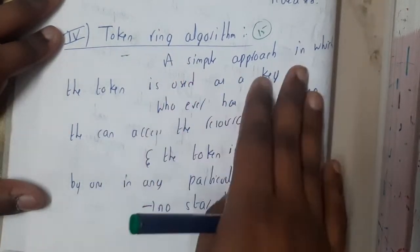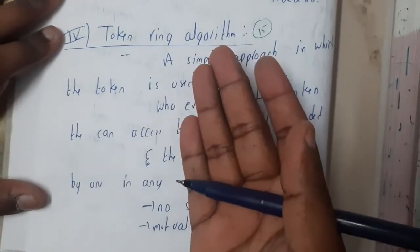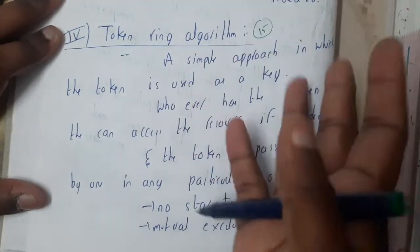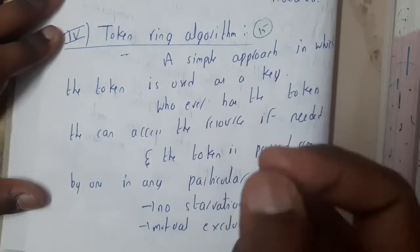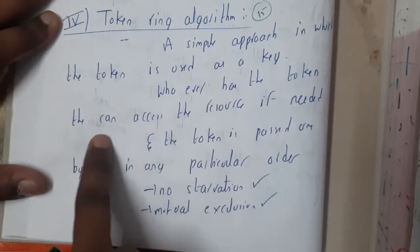A simple approach in which the token is used as a key. Basically, if you have the token, you can use it. Once you return the token, you cannot use it anymore. So you need to have the token to use it. Whoever has the token can access the resource if needed.